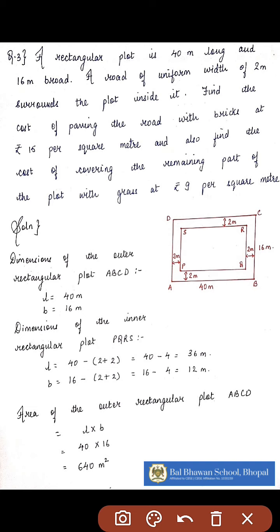Now according to the question, the outer rectangle ABCD is the rectangular plot, and its dimensions are length as 40 meters and breadth as 16 meters.